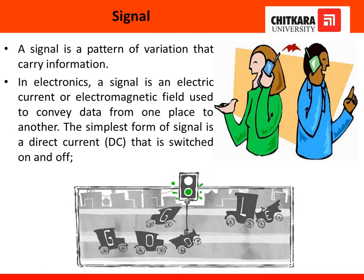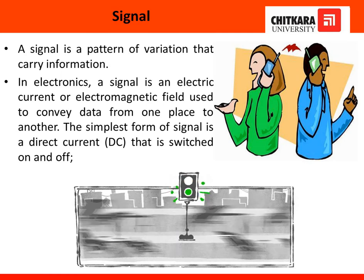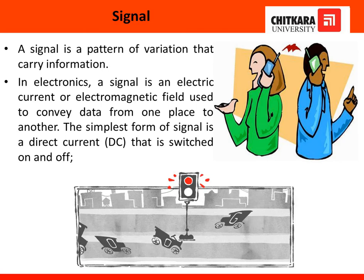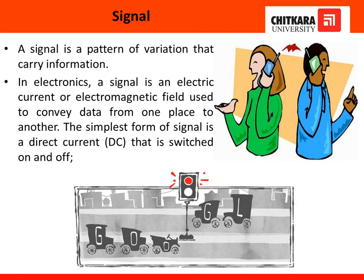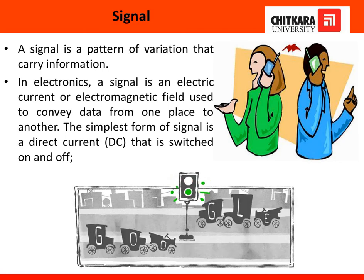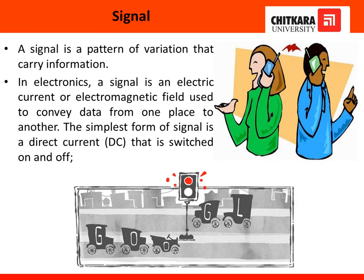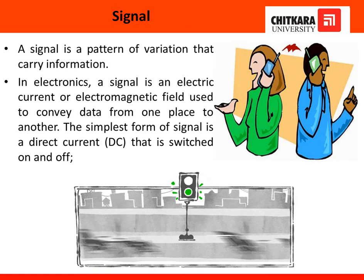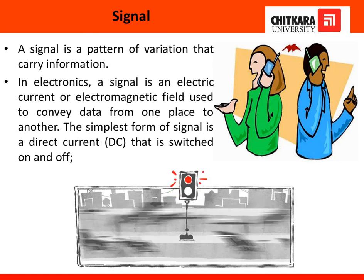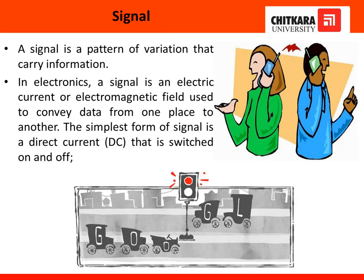In order to understand the term signal, we have to understand these two figures. In one of the figures, two persons are communicating with each other, meaning there is a transformation of the signal from one person to another, which actually lies in free space. Another example of signal is given in this GIF, where it is just showing the red and green signal, and according to the signal, an action is performed as you can see.